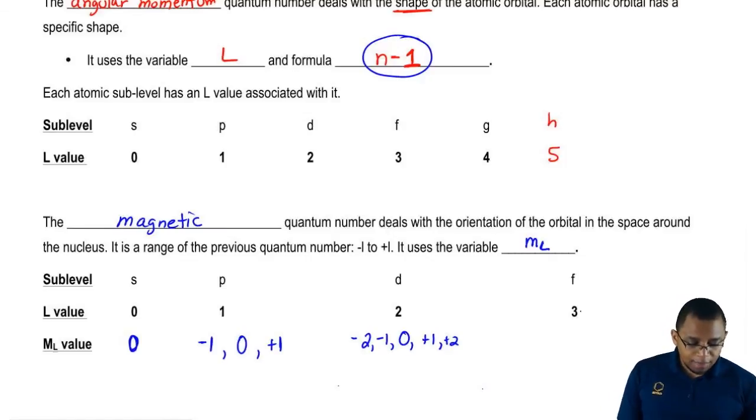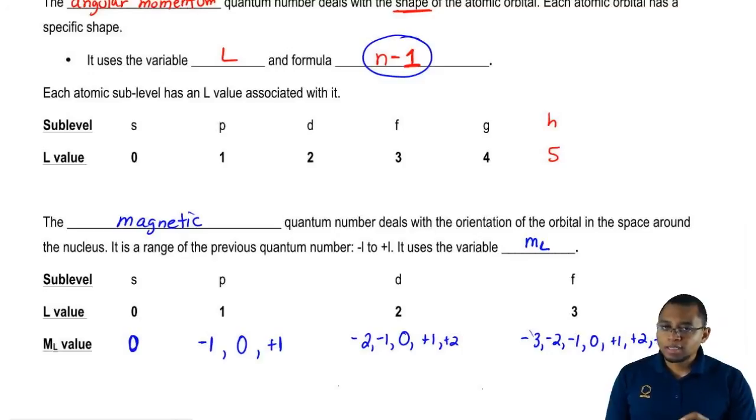And then if we go here, m sub L would be negative three, negative two, negative one, zero, plus one, plus two, plus three.